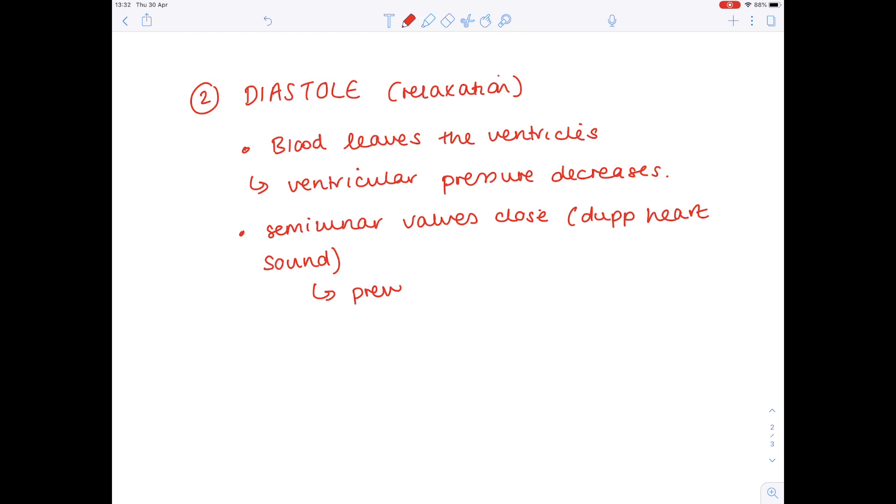You must remember now that when the ventricular pressure is lower than the atrial pressure, we want that atrioventricular valve that sits between the atria and the ventricles to open, to allow blood flow from the atria to the ventricle. So the ventricular pressure is less than the atrial pressure.